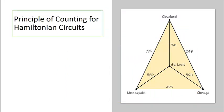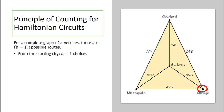Here's what the principle of counting tells us for our Hamiltonian circuits. For a complete graph of n vertices, there are n minus 1 factorial possible routes. Why? Well, we assume that we're not allowed to pick our starting city because we live where we live. But once we know where we're starting, from that starting city, there are n minus 1 choices for where we'll go first.